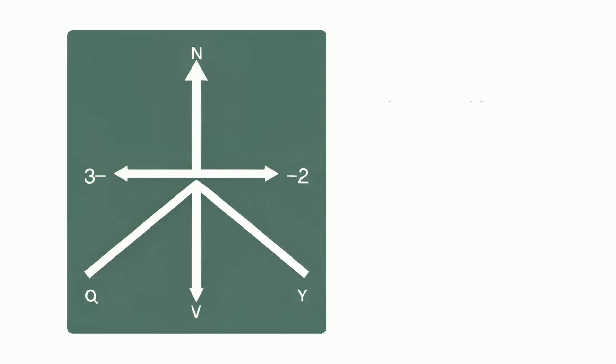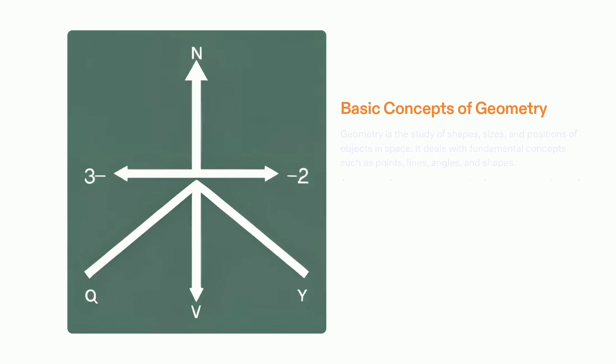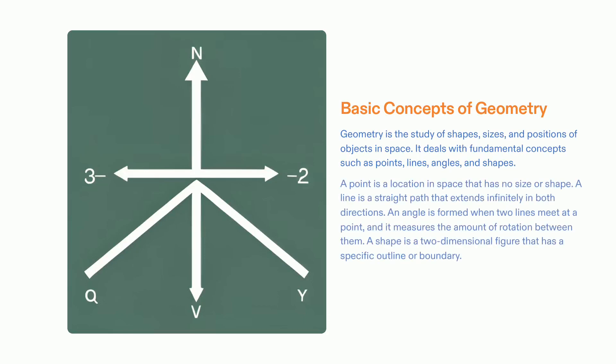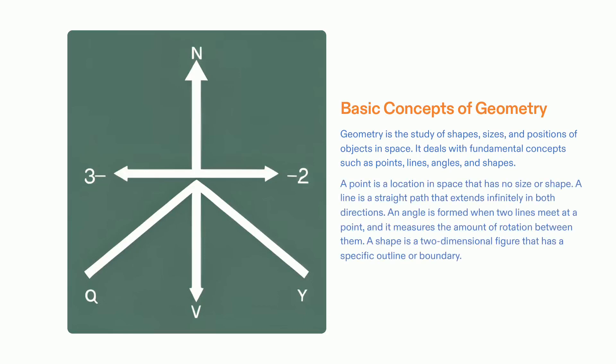Geometry has been an integral part of mathematics since ancient times. It originated in the civilizations of Mesopotamia, ancient Egypt, and ancient Greece, and has been used to understand and measure the properties of objects in nature such as the shape of mountains, the width of rivers, or the size of stars. Geometry has also been utilized to model and design practical objects and structures, from buildings and bridges to machines and works of art.